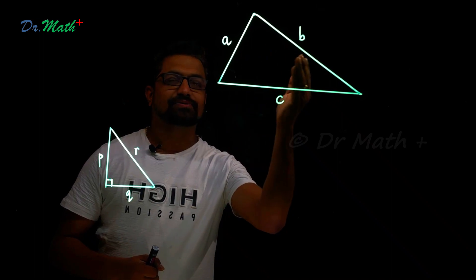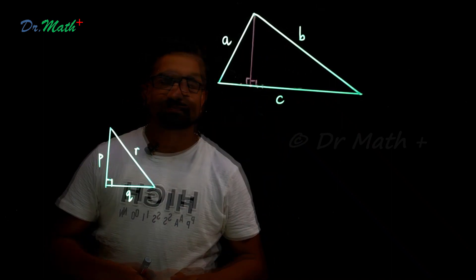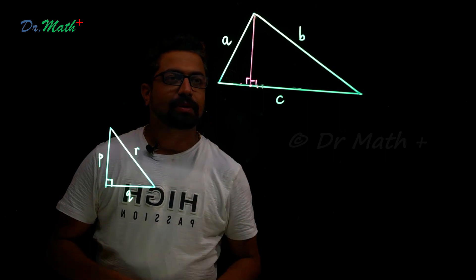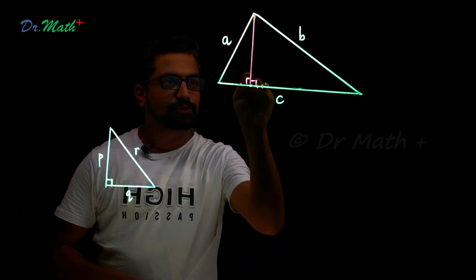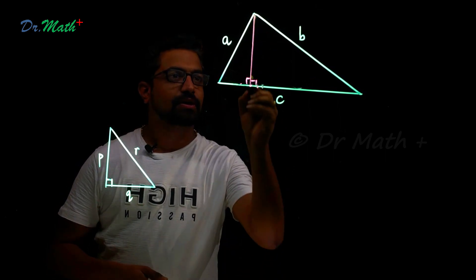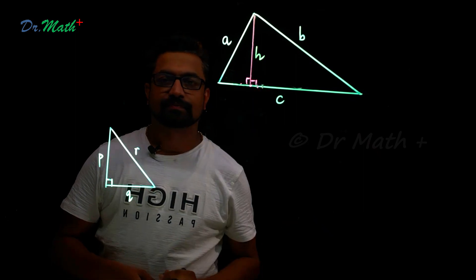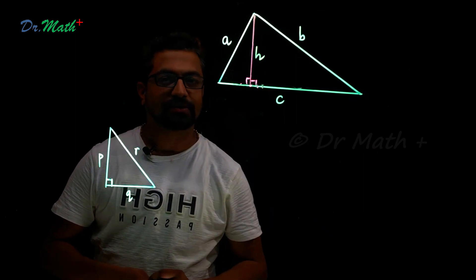For this, let's drop perpendicular from this vertex to the base and let's call this as h. This is also called as altitude of the triangle.